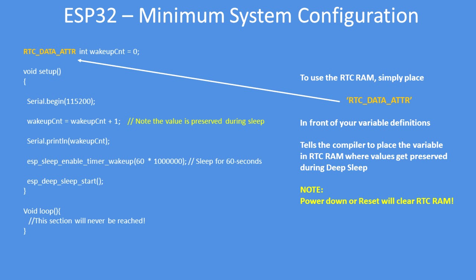Making the change is very straightforward. Write your program to retain the values of variables you want to preserve during sleep, then prefix them with the real-time clock data attribute. Just one simple change.